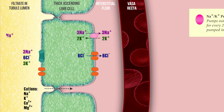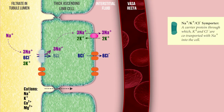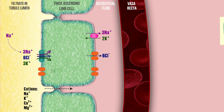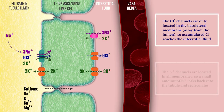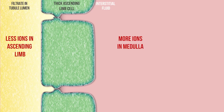Sodium ions then diffuse from the fluid in the ascending limb into the cells of the ascending limb to replace the sodium ions lost. As they do, they pass through a carrier protein which also accepts chloride and potassium ions. These are co-transported into the cells with sodium ions against their concentration gradients and diffuse out with sodium ions into the medulla. The whole process is driven by the sodium-potassium pump and results in sodium, potassium and chloride ions accumulating in the tissue fluid of the medulla. Therefore, the concentration of these ions in the ascending limb decreases, while the concentration in the medulla increases.